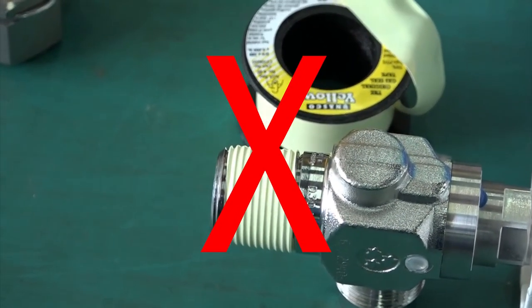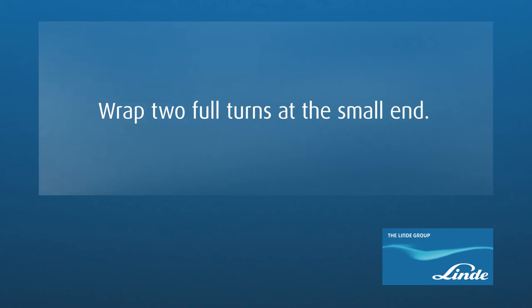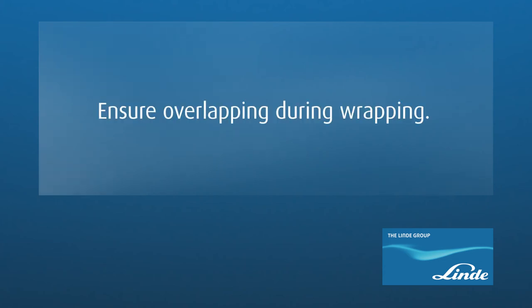To summarize, in this video we have learned that you should wrap in a clockwise direction from the small end. Wrap two to four turns at the small end. Ensure overlapping during wrapping. Do not stretch the tape excessively during wrapping.